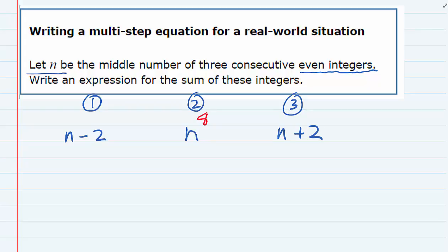If we were to add 2 to 8, that would give us 10 as the next consecutive even integer. And if I were to subtract 2 from 8, I would have 6. So we would have three consecutive even integers with 8 in the middle.